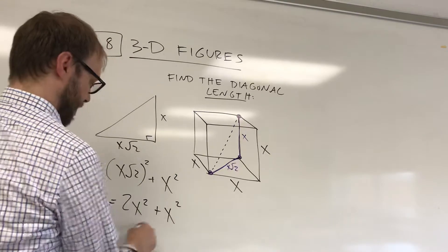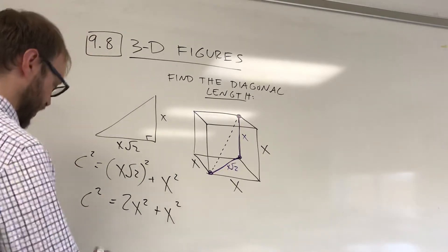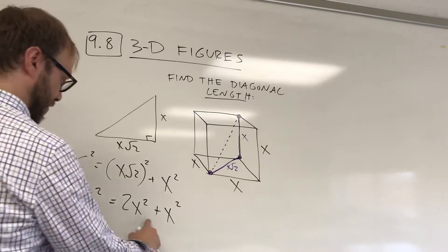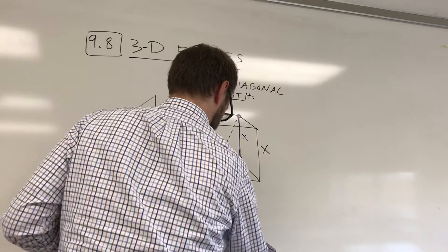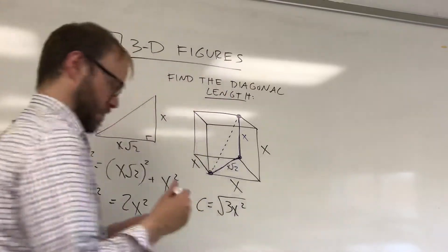These are like terms. They add up to be 3x squared. So, if c squared is equal to 3x squared, that means c is equal to the square root of 3x squared.